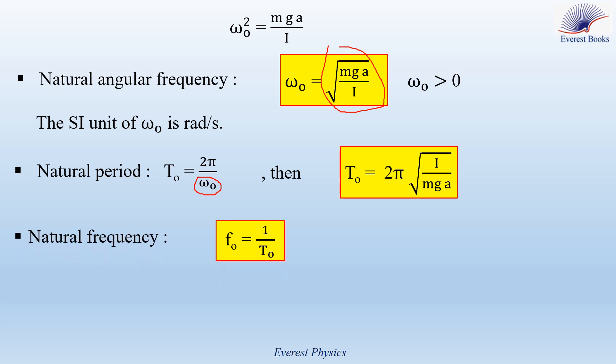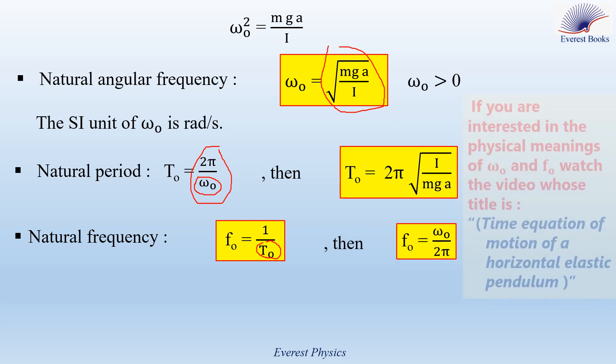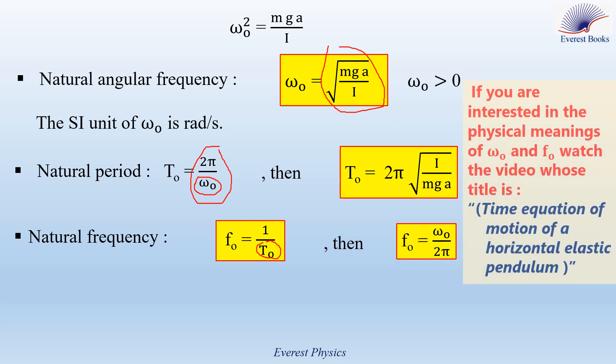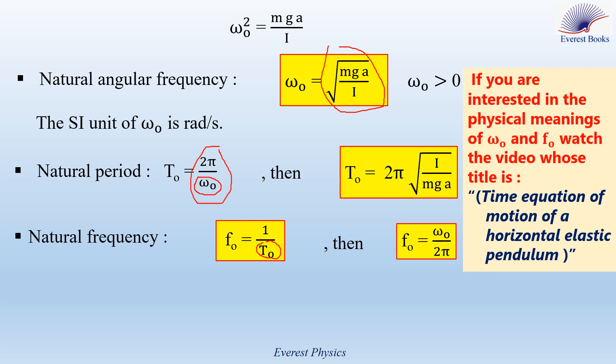The natural frequency is F0 equals 1 over T0. Replacing T0 by 2 pi over omega-0 gives F0 equals omega-0 over 2 pi. The SI unit of F0 is Hertz. If you are interested in the physical meanings of omega-0 and F0, watch the video titled 'Time Equation of Motion of a Horizontal Elastic Pendulum.'